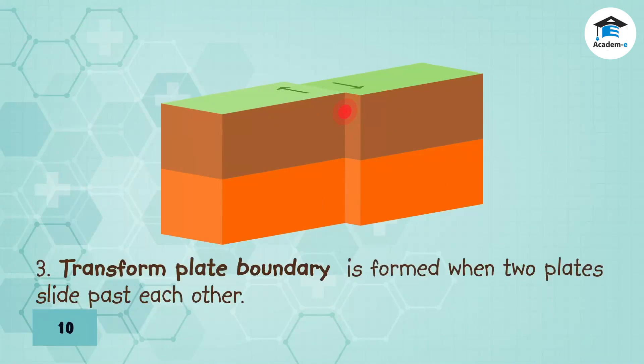The transform plate boundary is formed when two plates slide past each other. This causes friction and a strong bumpy motion of the plates as they move apart, which produces an earthquake.